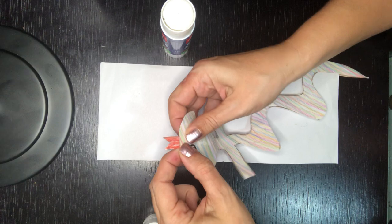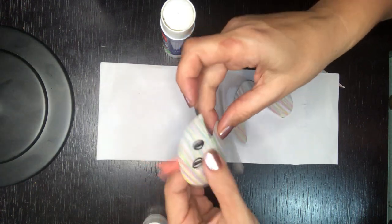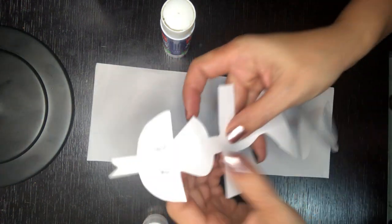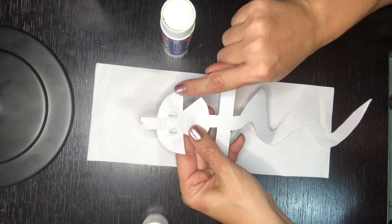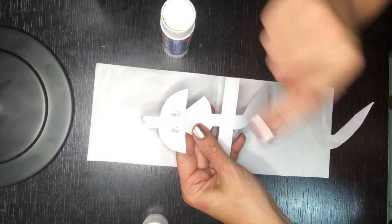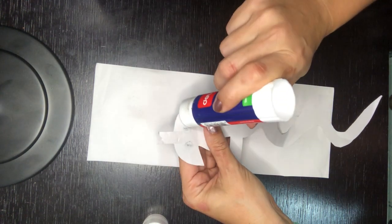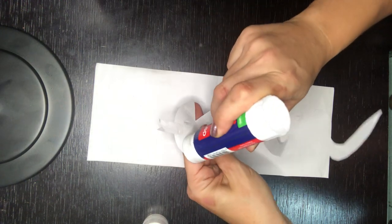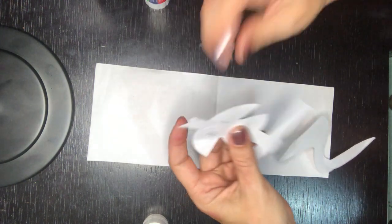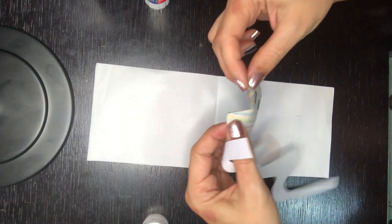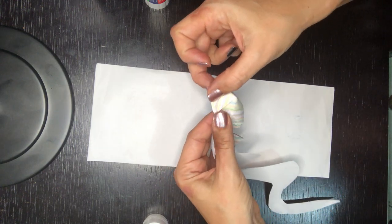One, two. Okay that should be stuck and now we're going to turn it over and we're going to put glue here and here. Okay the top of the head of the snake. And we're going to fold it together like this.